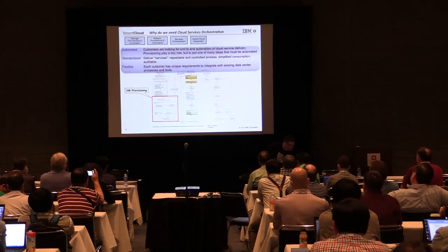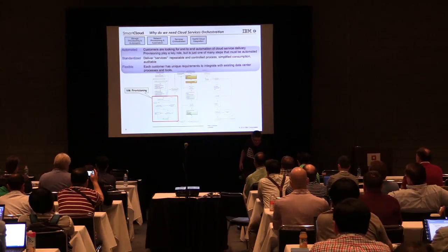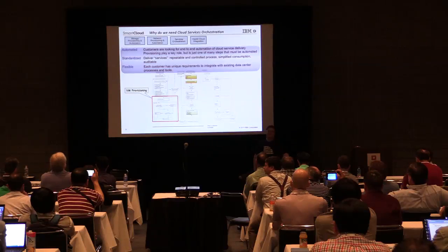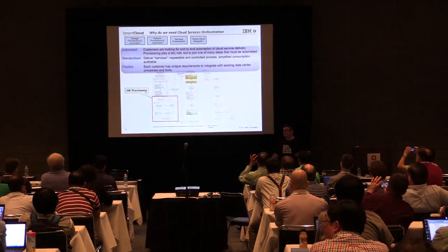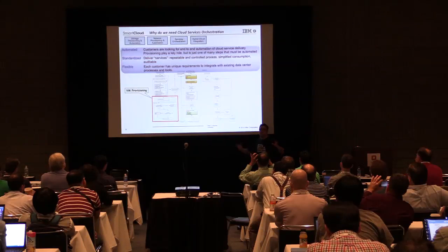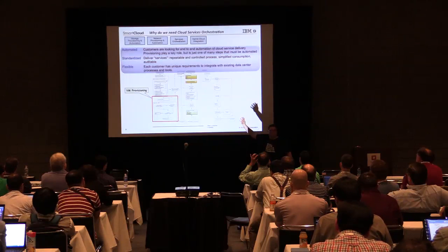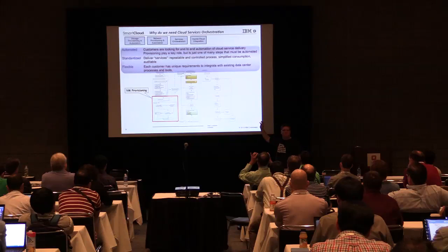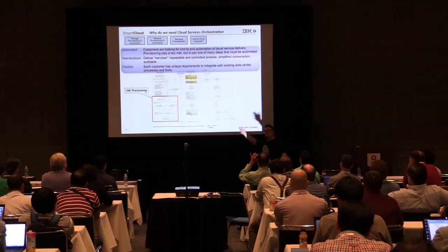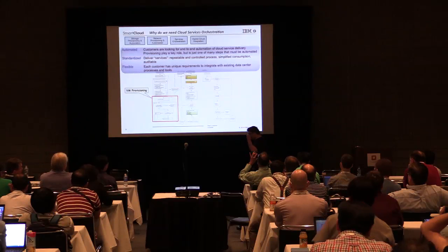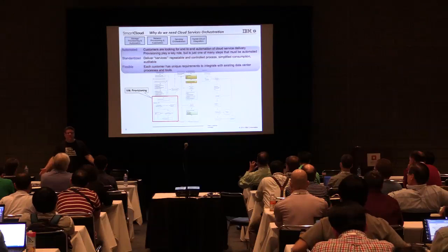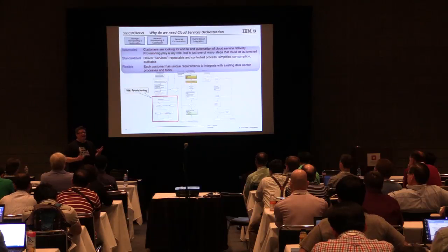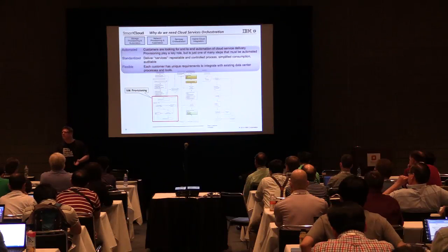So why do we need orchestration? Here's an example taken from a customer showing all the business processes that we have to put around all the stuff that we do. This is much more typical of what you see in production pet-style workloads than in livestock-style workloads. But we all have to deal with these. There are kind of two classes of why you need workflow or runbook-style automation.